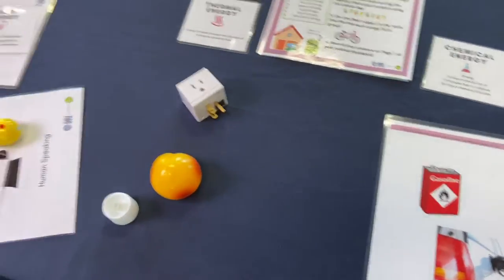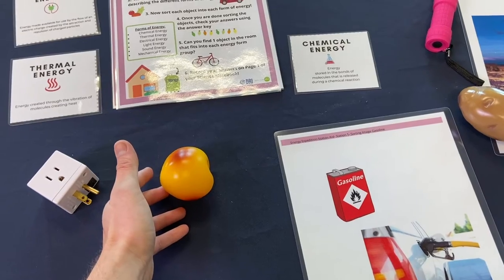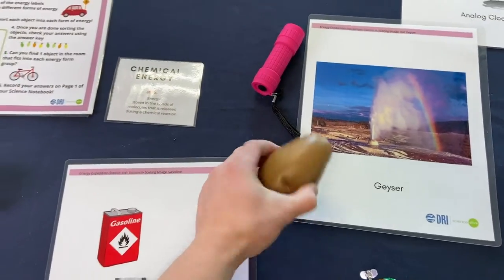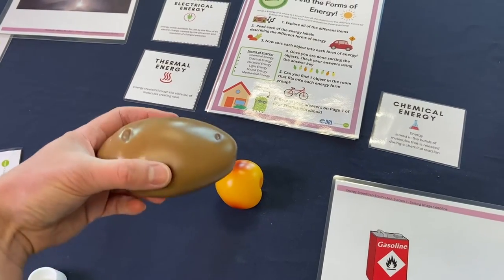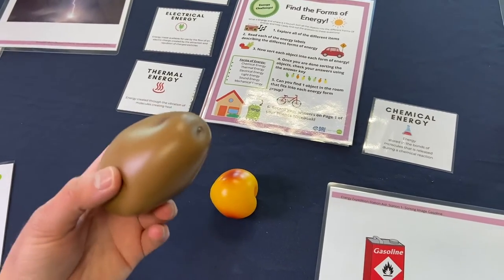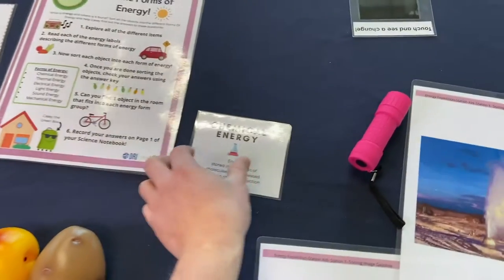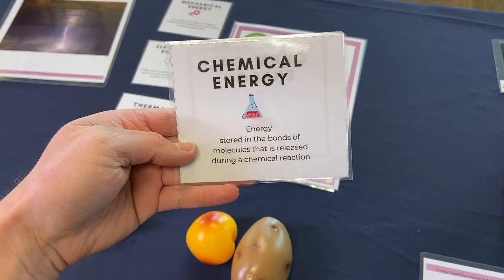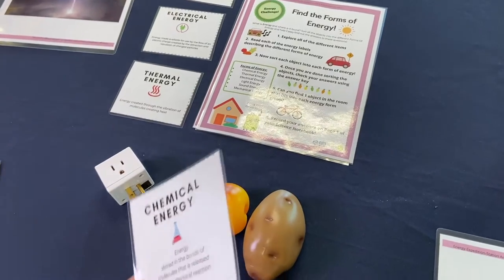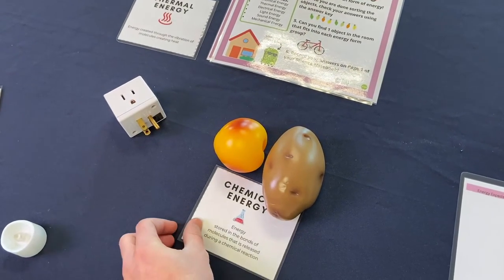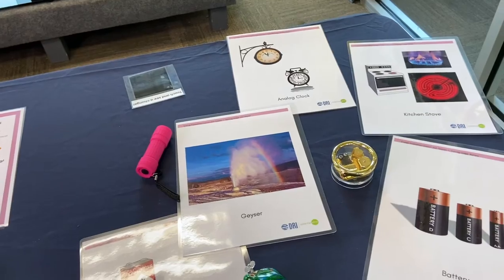We've got a peach — let's put the peach right here — and we got another food item which is a potato. When I think of this type of stuff, I'm thinking when your body eats it, it's taking in calories, so that is a form of chemical energy. Chemical energy says: energy stored in the bonds of molecules that is released during a chemical reaction. Yes, I think that fits the description of these food items perfectly.